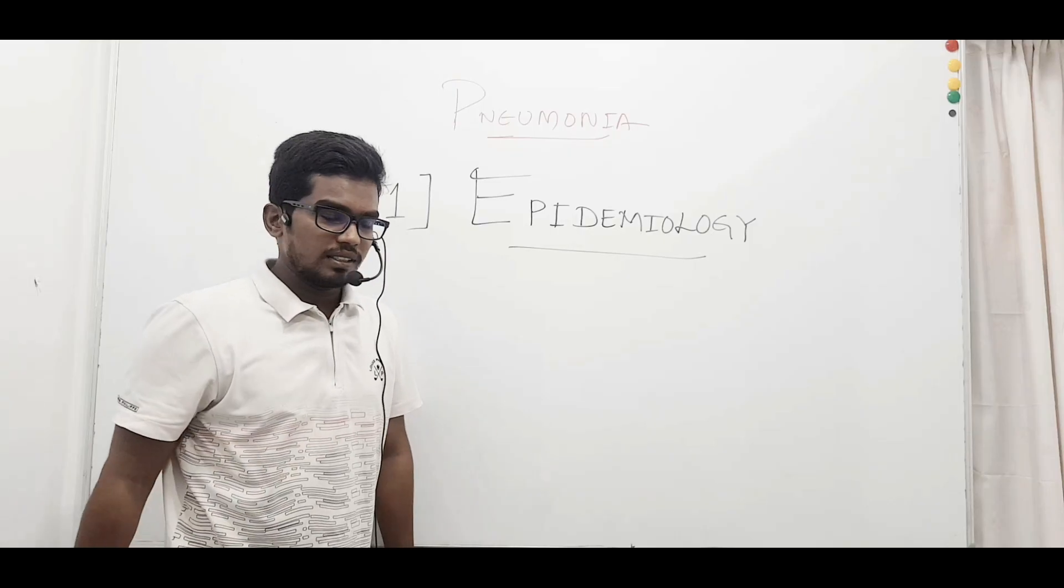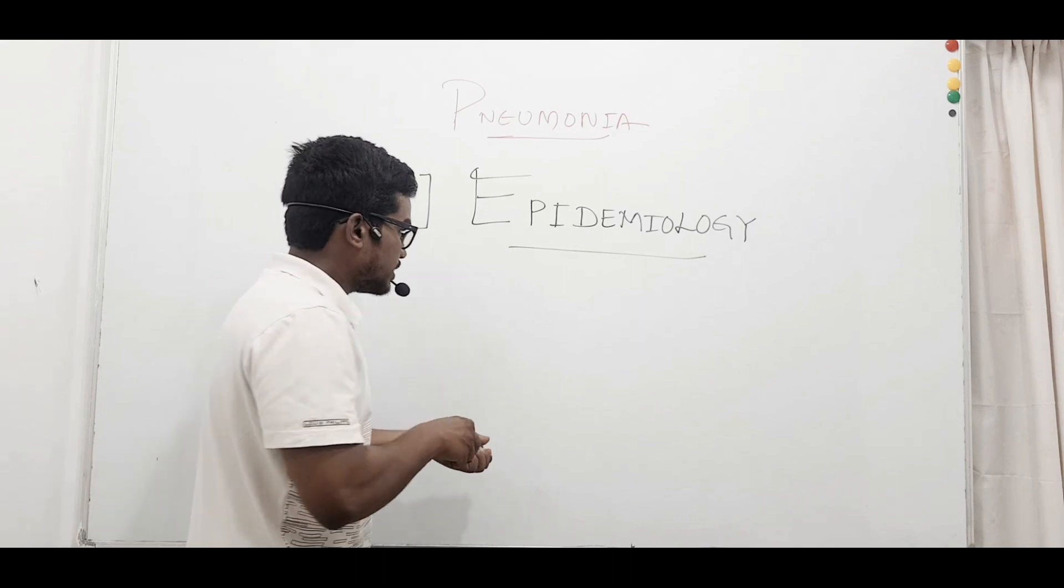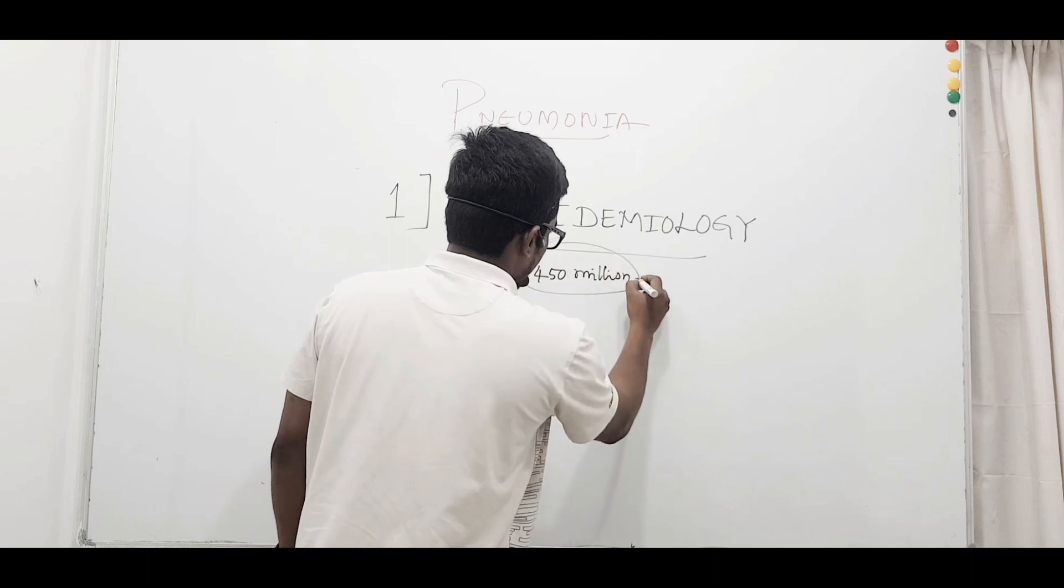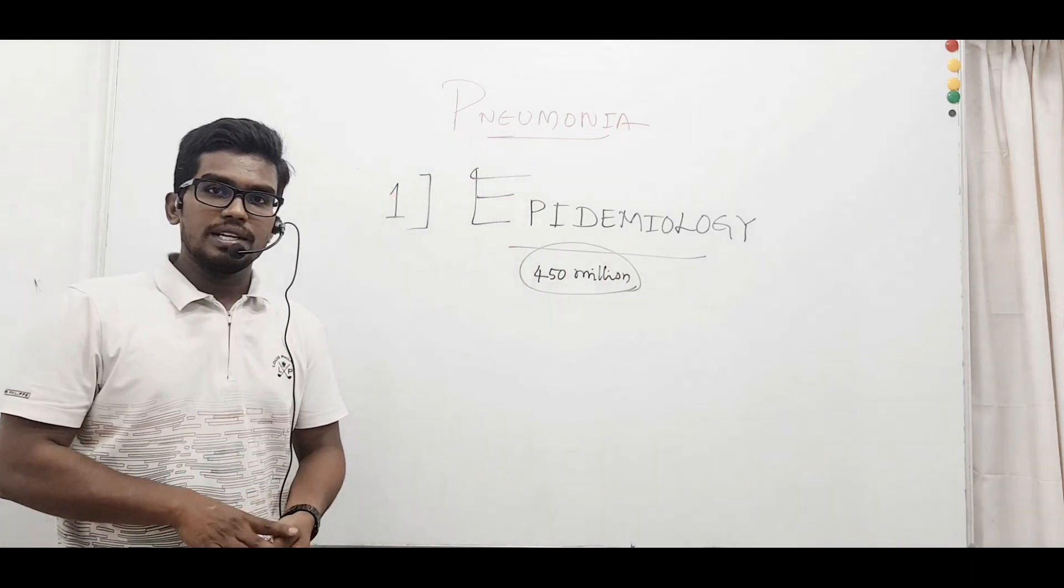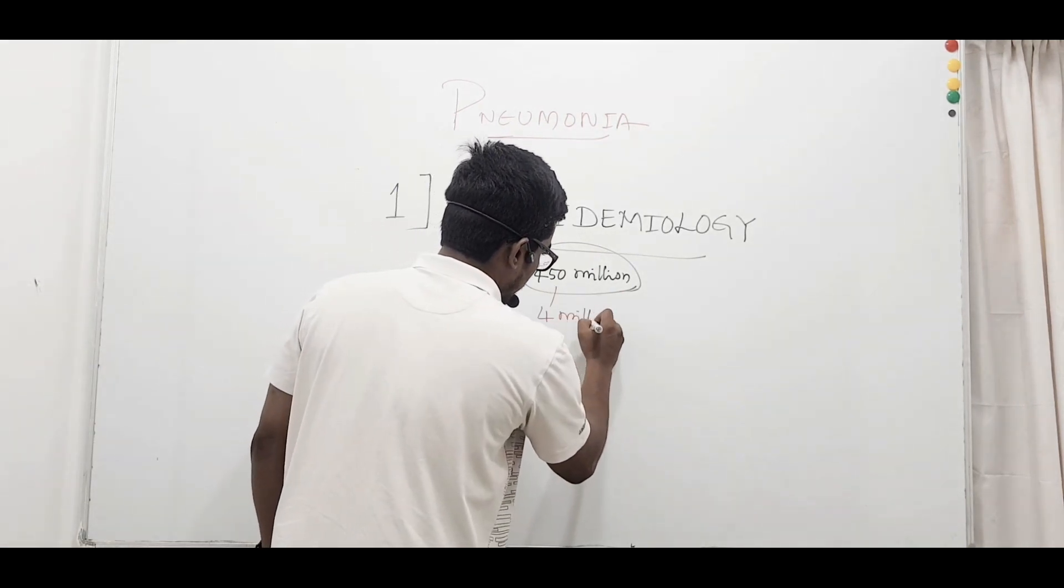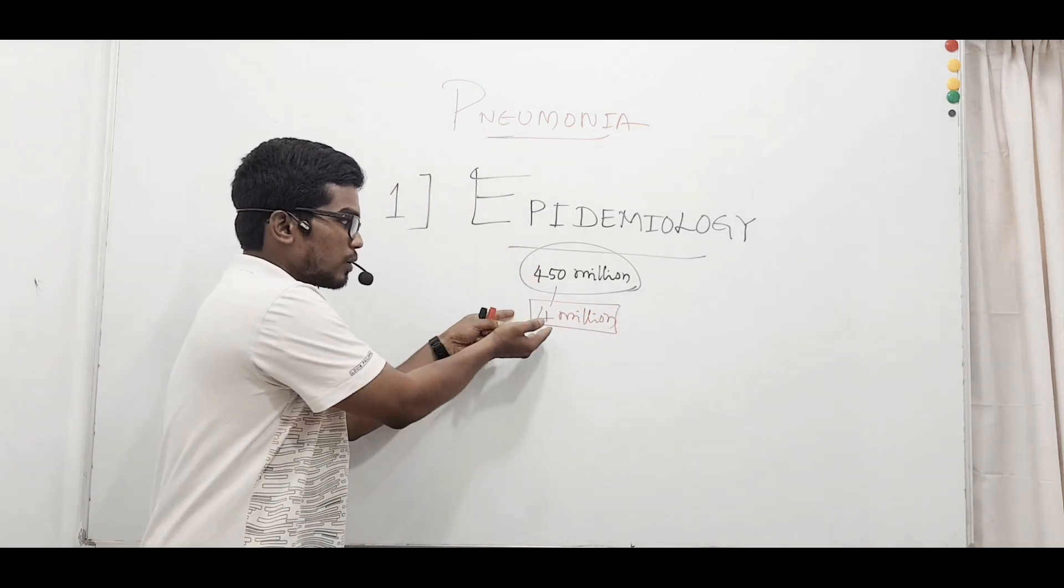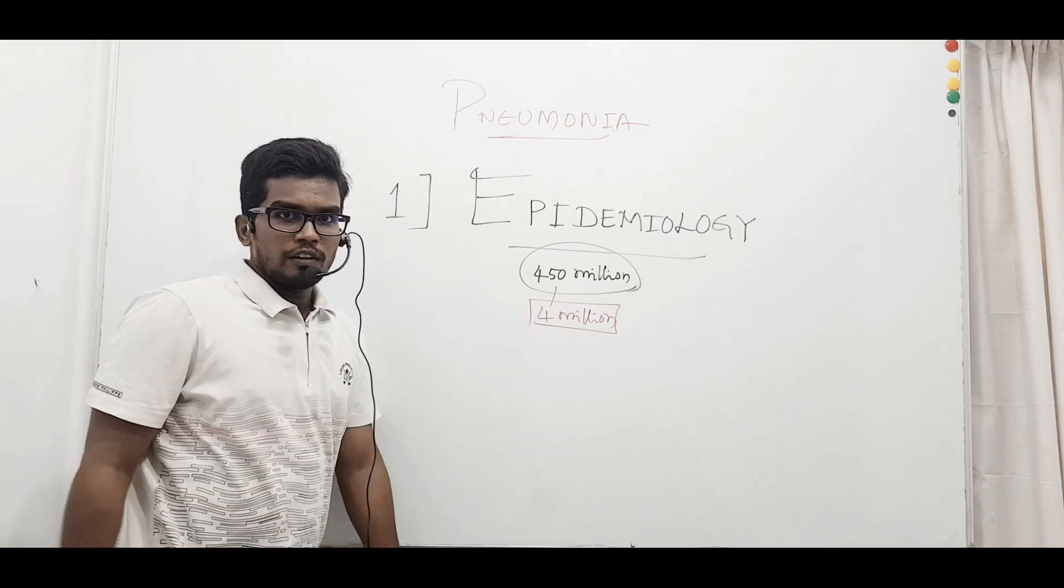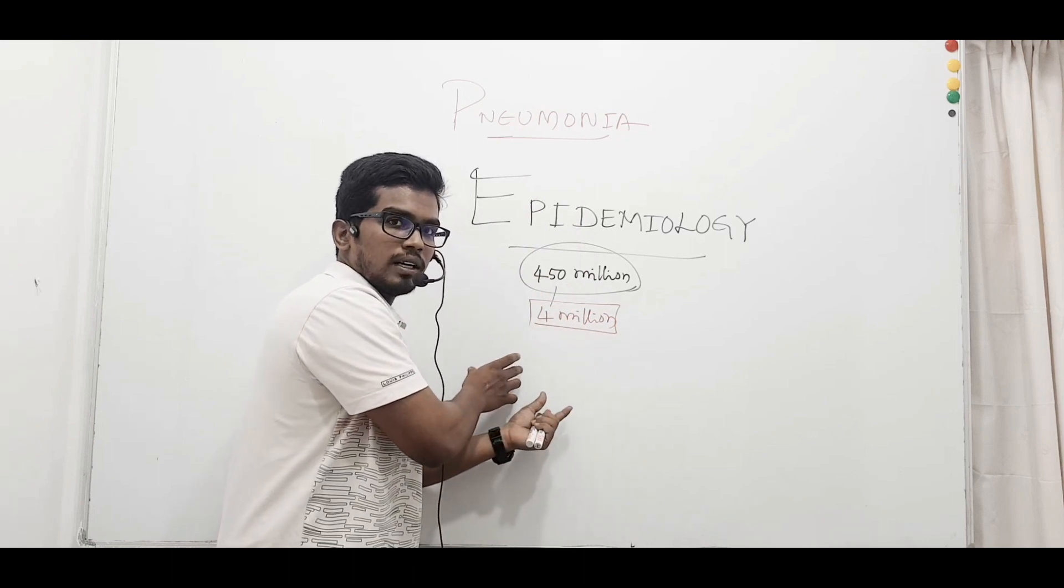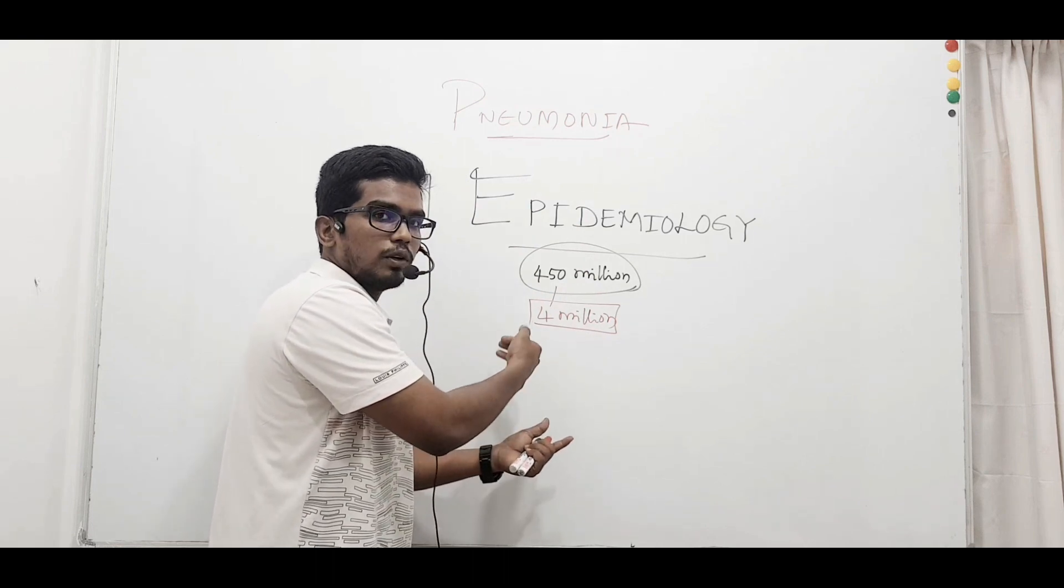Coming to the epidemiology, this pneumonia disease causes 450 million infections among people throughout the year, and among this around 4 million people are fatalities—meaning it results in death of 4 million people. The incidence is higher in children below age 5 and people above 65 years.